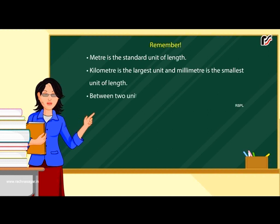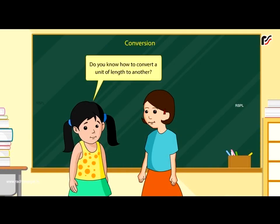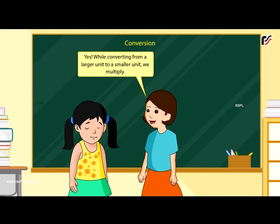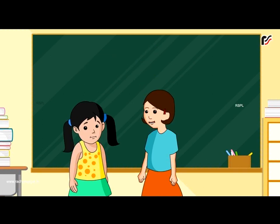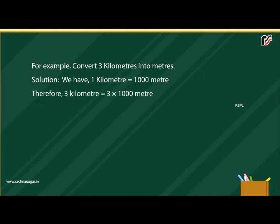Between two units there is a jump of ten. To convert a unit of length to another — while converting from a larger unit to a smaller unit, we multiply. For example, convert three kilometres into metres. We have one kilometre is equal to one thousand metres. Therefore, three kilometres is equal to three multiplied by one thousand metres, which equals three thousand metres.